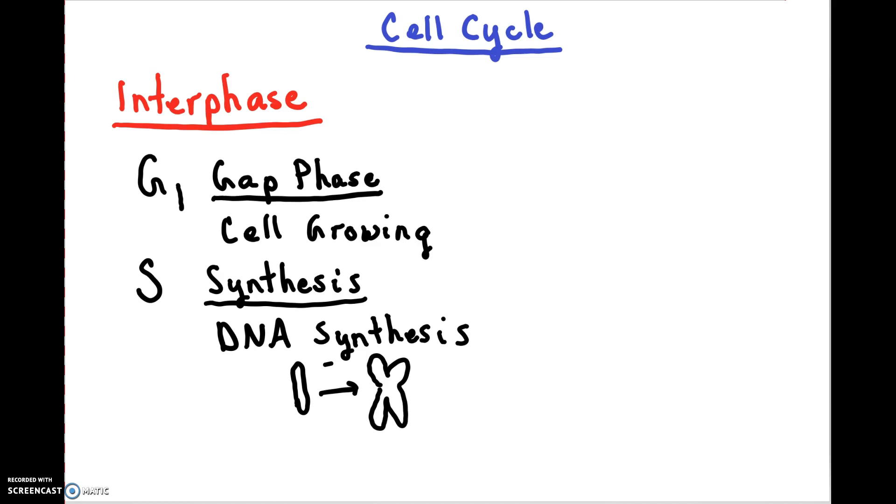After the cell goes through the S phase, it's then going to enter the second gap phase, which is called G2. In G2, the cell is simply growing, continuing to just be a busy little cell.